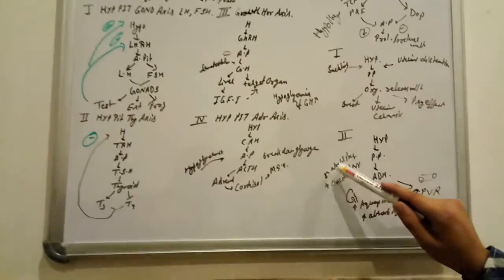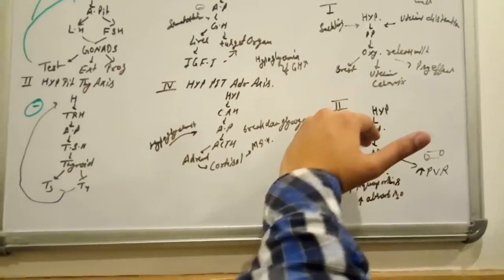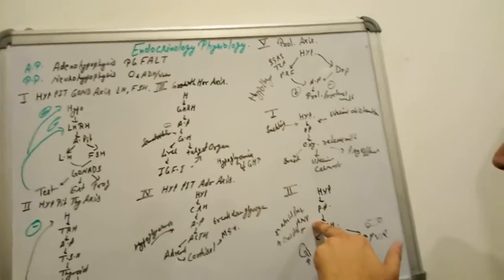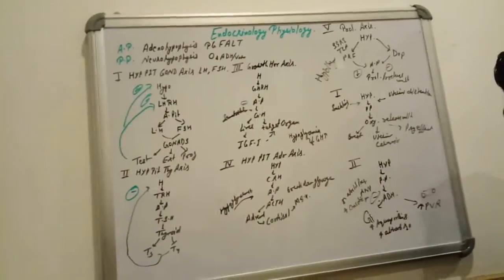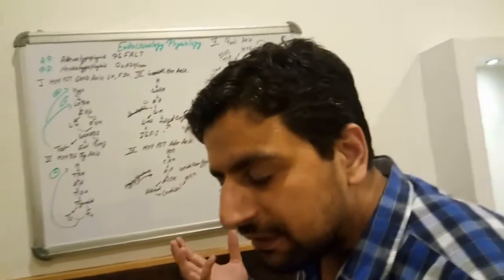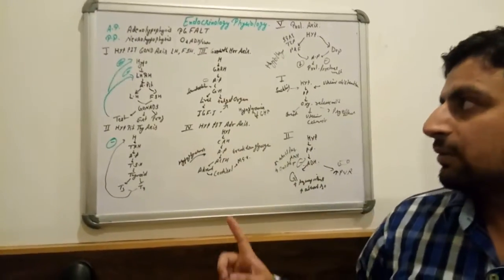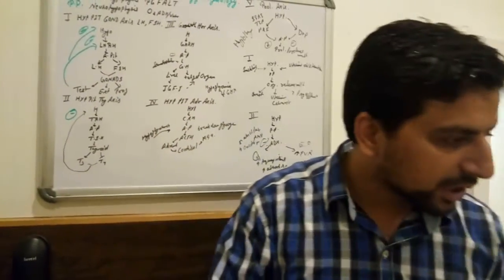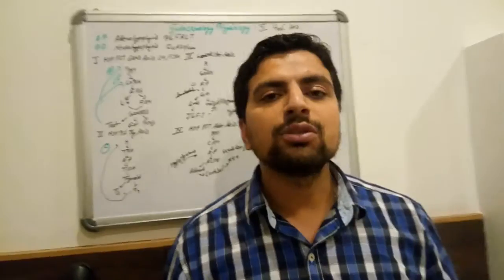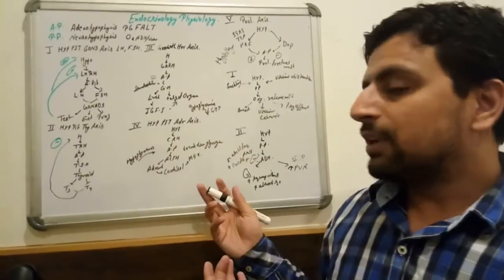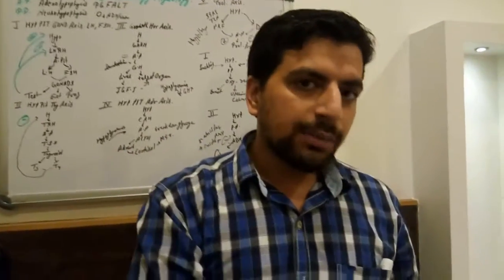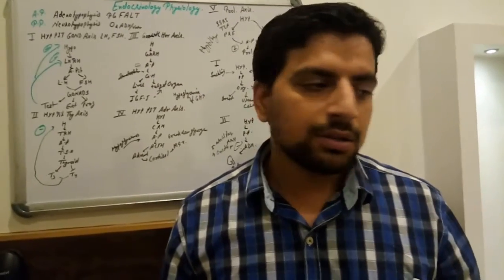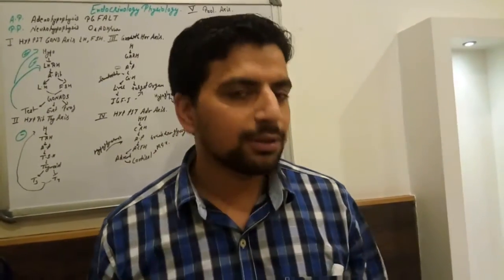Increased atrial pressure, increased oncotic pressure, and atrial natriuretic peptide signal ADH to act less. That's all for endocrine physiology — you will get at least one question from this topic. Thank you, my dear friends and online viewers. If you like this video, please subscribe and like. If you have any questions, put them in the comments and I will answer.